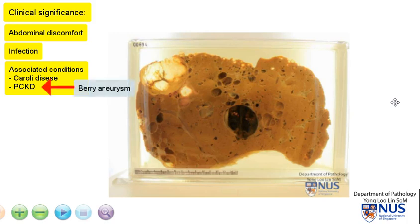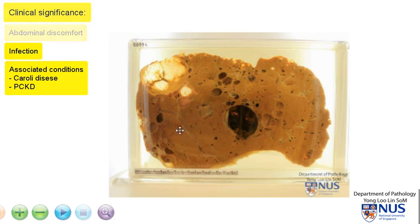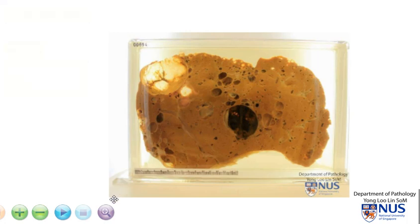For example, berry aneurysms in the cranial cavity. Also, other solid organs may show cysts similar to the liver, and these would include the pancreas, the spleen, and the lung as well.